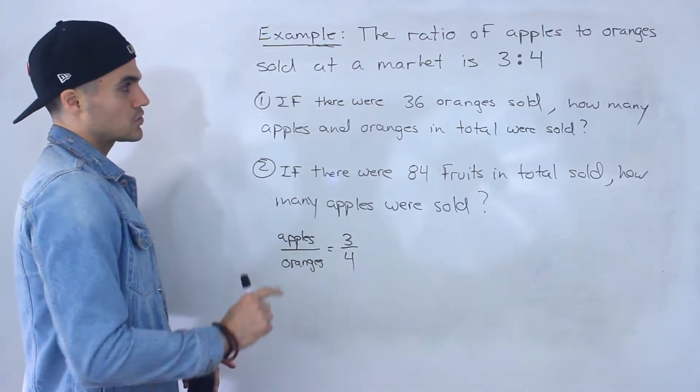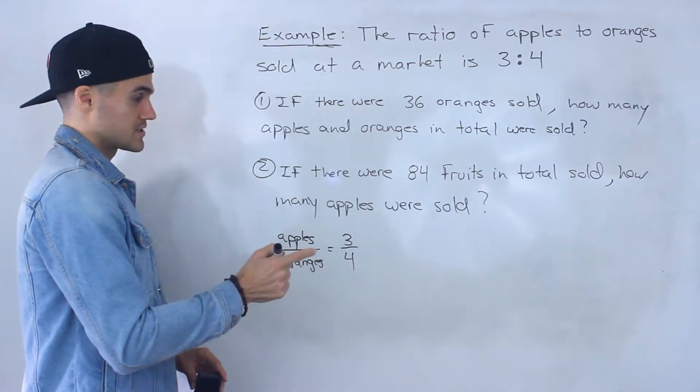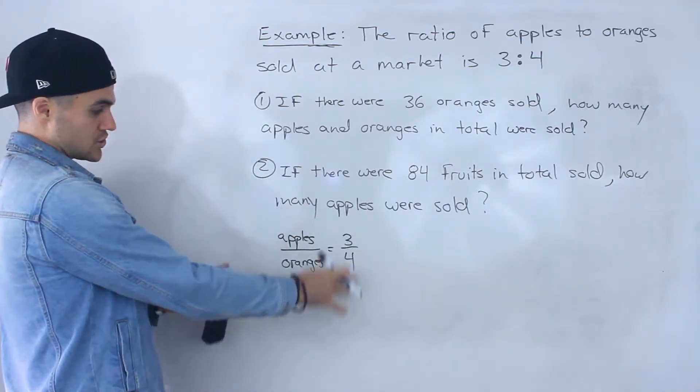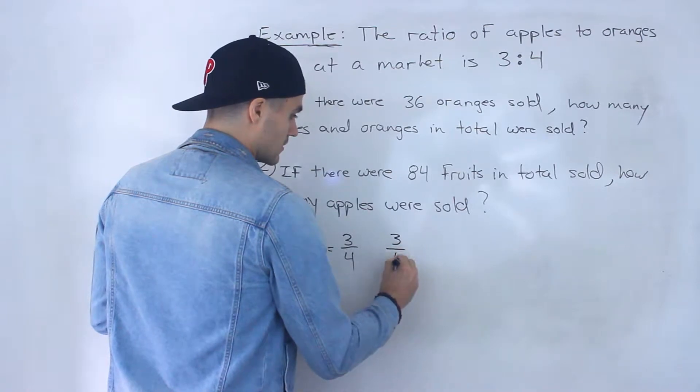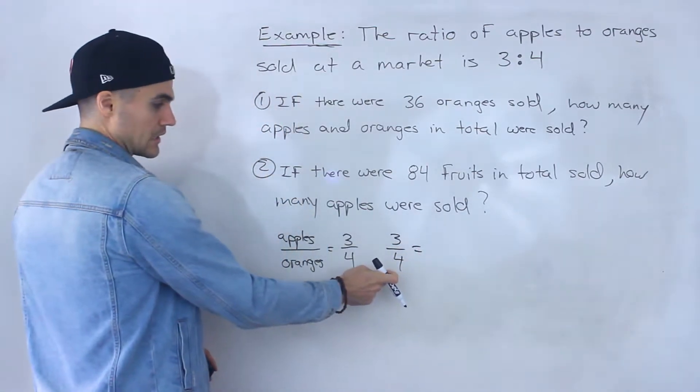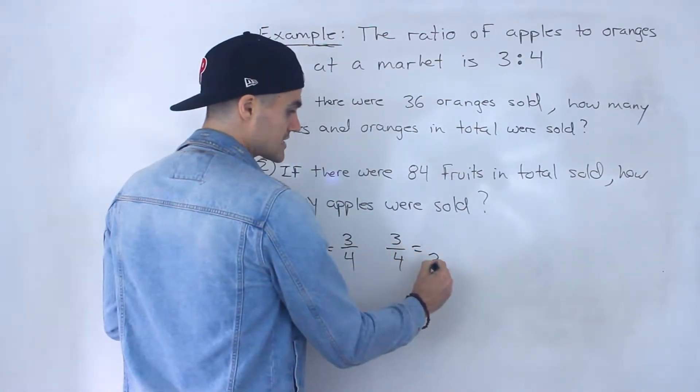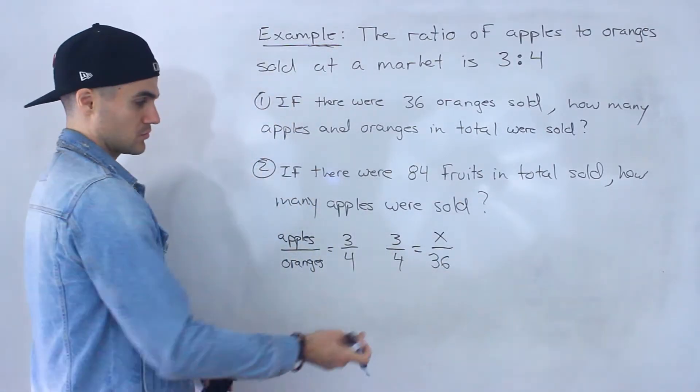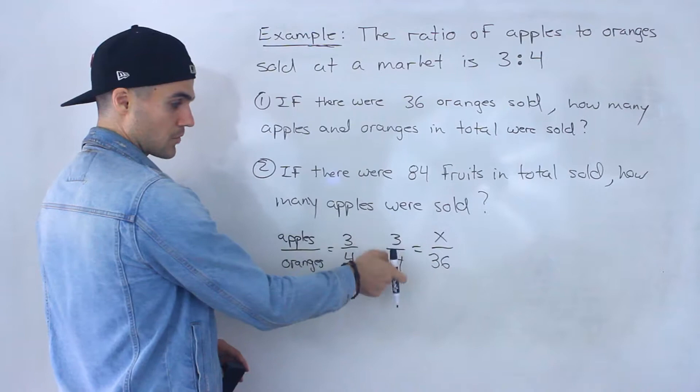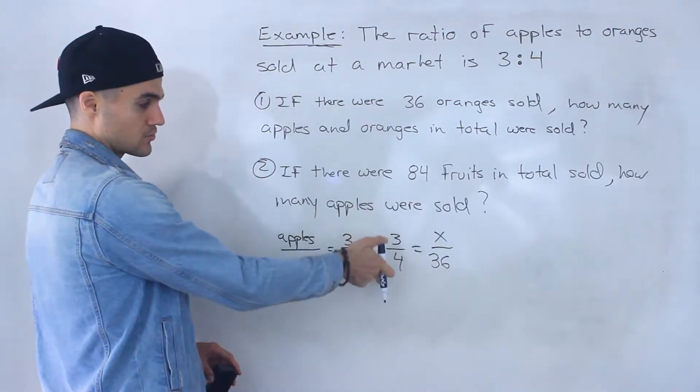Notice that we're told 36 oranges are sold. So with this ratio here, remember the denominator is the oranges. If there are 36 oranges sold, how many apples are going to be sold? Because the ratio of apples to oranges always has to be this 3 over 4 here.